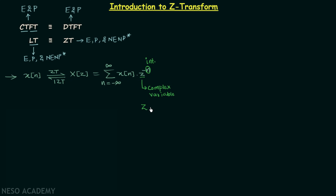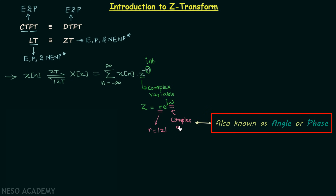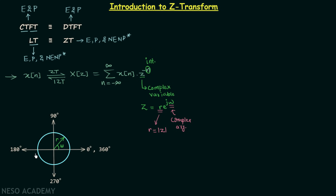Z is equal to R multiplied by e to the power j·omega. This is the polar form of the complex variable Z, where R is the magnitude of Z (R = |Z|) and omega is the complex argument. From this polar form we get a polar plot — a circle — because when omega changes slowly, R remains the same, giving us a circle.